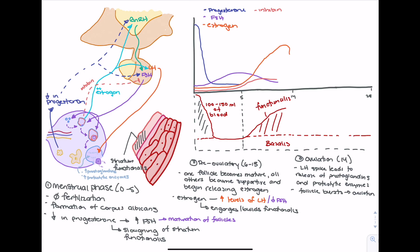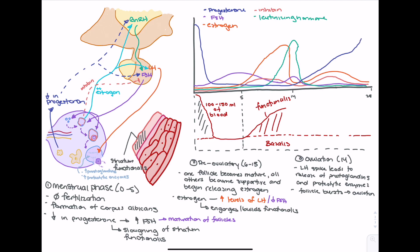Now that the egg has been released, we transition from the ovulatory phase to the post-ovulatory phase, where the corpus luteum plays a very important role. The ovulatory phase is characterized by this peak in luteinizing hormone at day 14. As the egg is released, the follicle wall remains, and in the post-ovulatory phase that follicle wall causes the formation of the corpus luteum. The corpus luteum releases a number of hormones — estrogen, progesterone (the main hormone), relaxin, and inhibin.